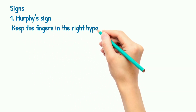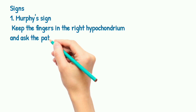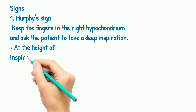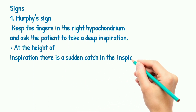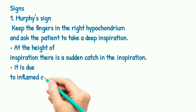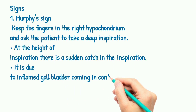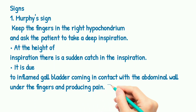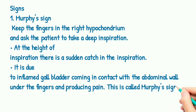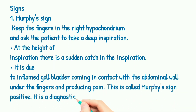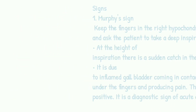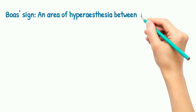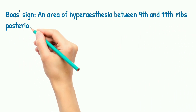Murphy's sign: keep the fingers in the right hypochondrium and ask the patient to take a deep inspiration. At the height of inspiration, there is a sudden catch of breath. This is due to the inflamed gallbladder coming in contact with the abdominal wall under the fingers and producing pain — this is Murphy's sign positive, a diagnostic sign of acute cholecystitis. Boas sign is an area of hyperesthesia between the ninth and eleventh ribs posteriorly on the right side.